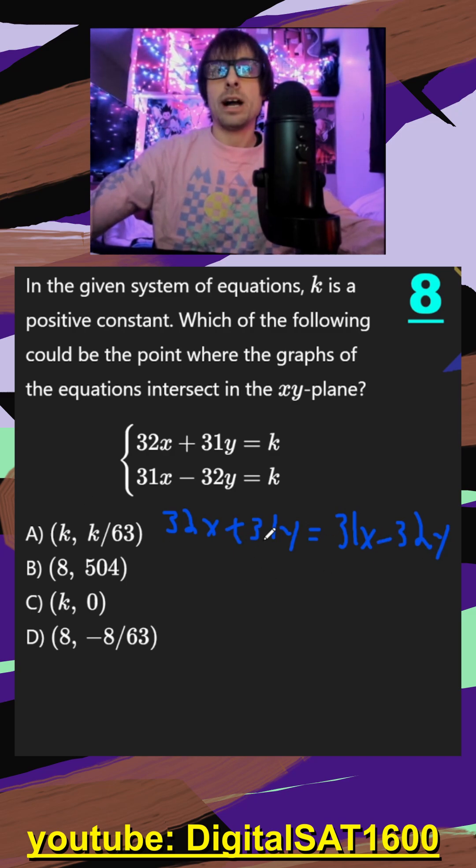So I would add my y to the other side, so that's going to be 63y. And that's going to be equal to, if I subtract 32x, I should get negative 1x. Divide by 63, and we're going to get y is equal to negative 1 over 63x.